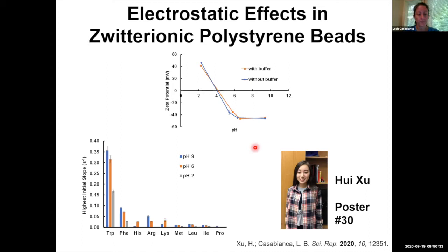The next set of amino acids with measurable STD effects were positively charged amino acids — histidine, arginine, and lysine. At low pH, where the beads are positive and the amino acids are also positive, there is no measurable STD effect. But once you get to neutral and high pH, you see an STD effect for these amino acids.